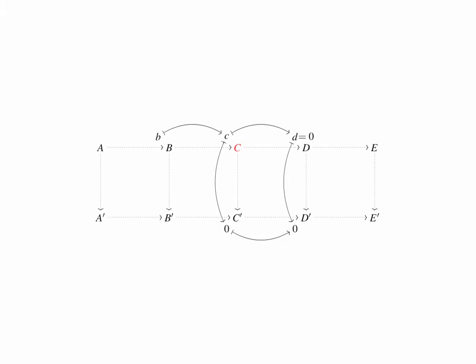Now, exactness of the top row at C shows that there exists a B back in the group B, which maps to C. Using the commutativity of the centre-left square, we see that this element B maps to 0 via B', where it maps to some element which we'll call B'. Using exactness of the bottom row at B', we see there's an element A' mapping to B', and now, since we're given that the map from A to A' is an epimorphism, we find that there's an element A in A, which maps to A'.